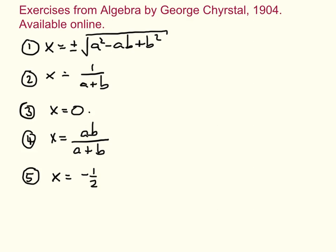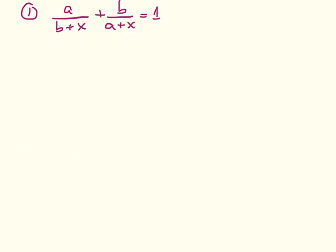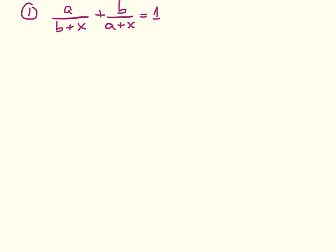Here is our first equation: a over b plus x, plus b over a plus x, is equal to 1. From the form of this equation we see immediately that b plus x and a plus x cannot be zero, because we're not allowed to divide by zero. Since they're not vanishing, the simplest thing to do is to multiply both sides of this equation by b plus x and also by a plus x.